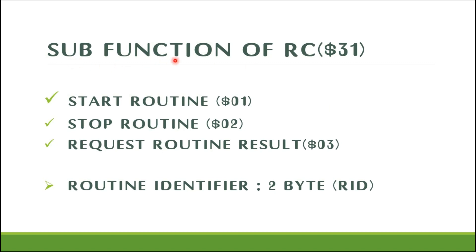Here you can see the sub-functions of routine control service 0x31. There are three sub-functions: start routine with sub-function 01, stop routine with sub-function 02, and Request Routine Result with sub-function 03. These are followed by a two-byte routine identifier (RID). This RID is mostly customer-specified or sometimes supplier-specified — it depends on OEM to OEM and supplier to supplier.